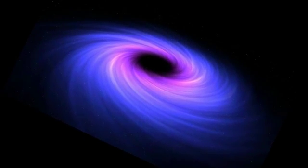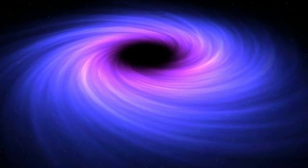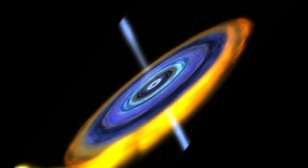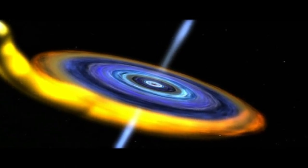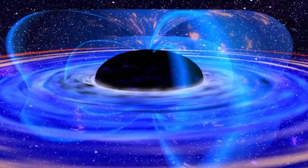That's because they're surrounded by features known as accretion disks, which are made up of gas and dust that heat up and give off light as it swirls into the black holes.